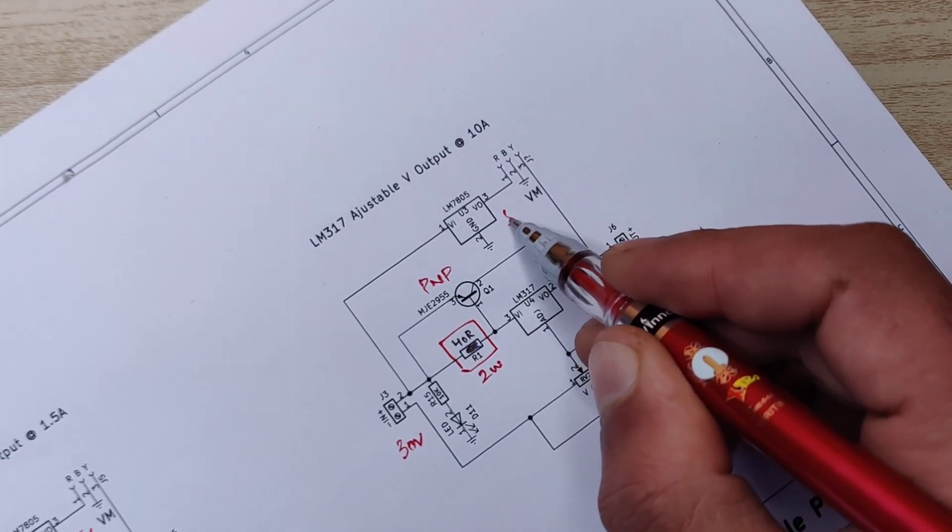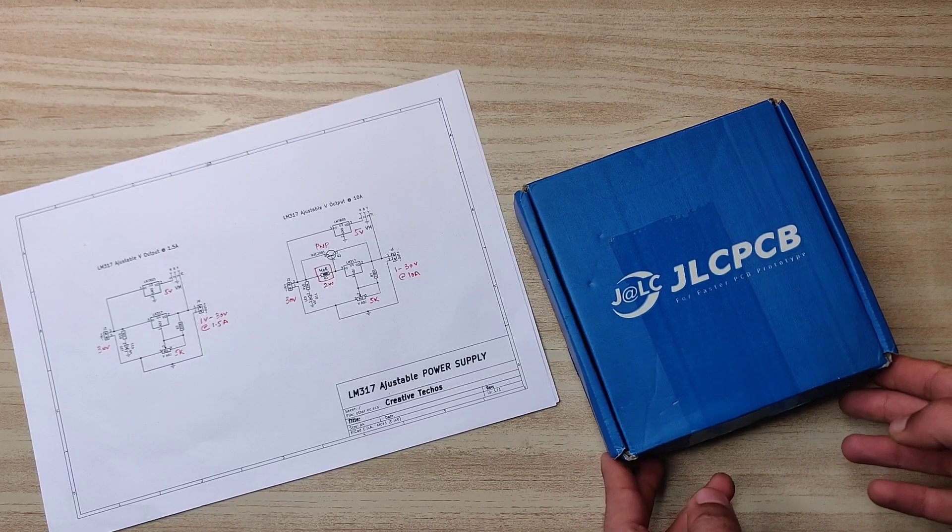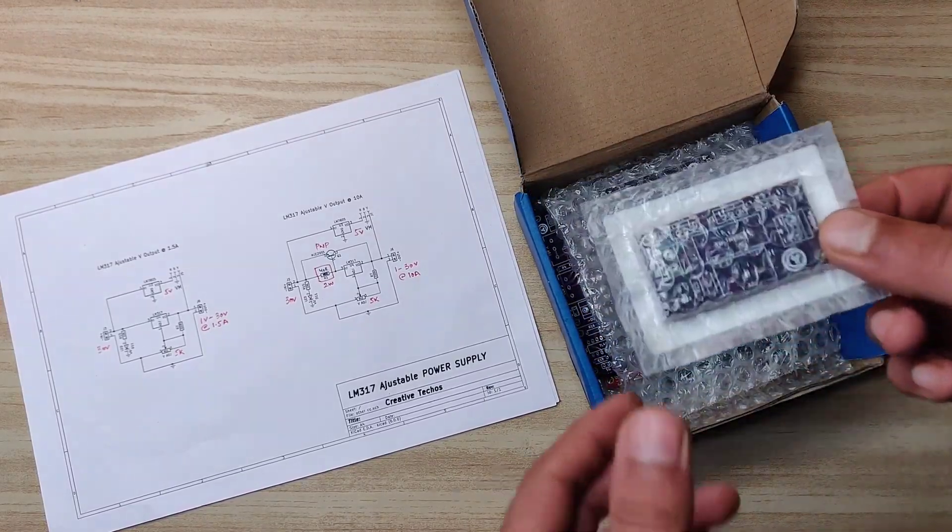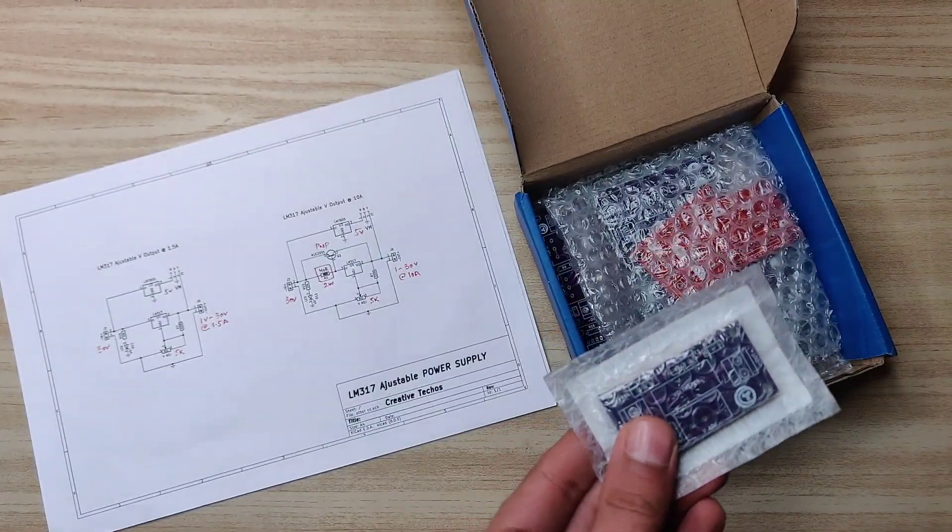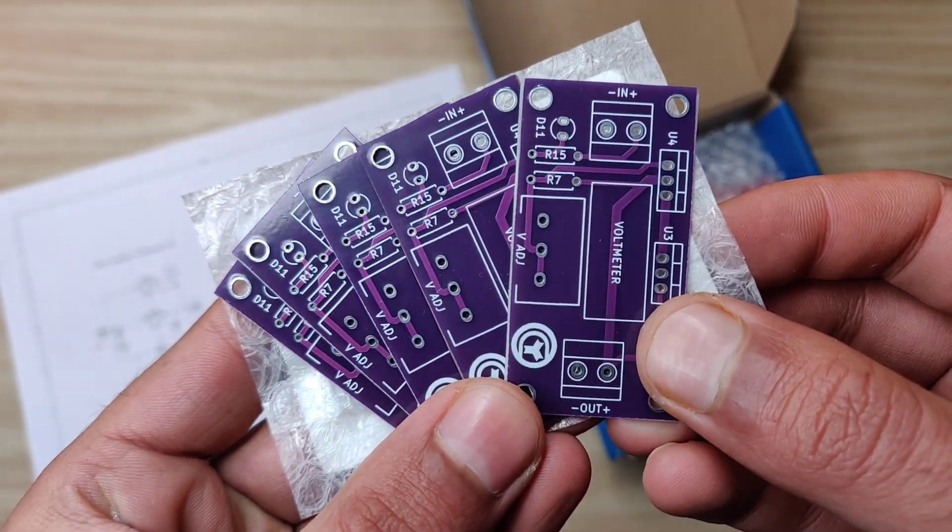And also same 5 volt regulator for voltmeter. To make it more easy to assemble, I also designed the PCB for this project. The Gerber file and diagram download link is given in the video description.